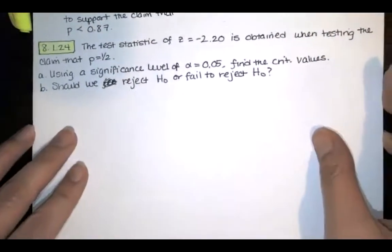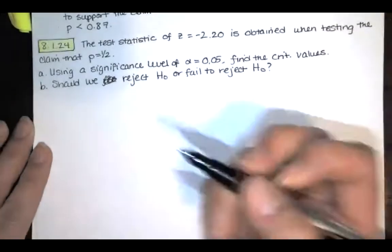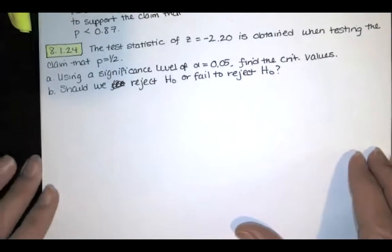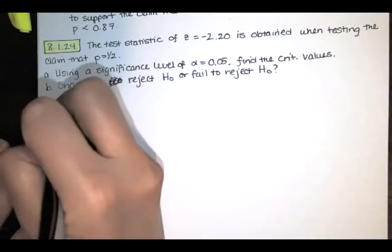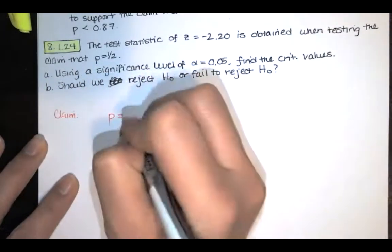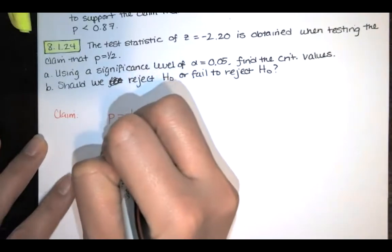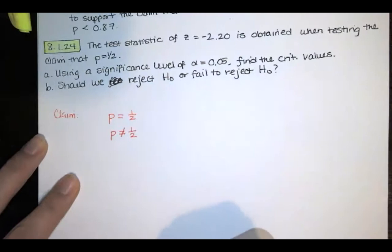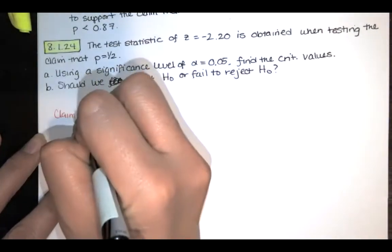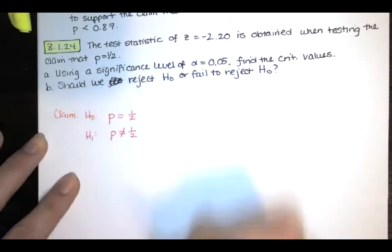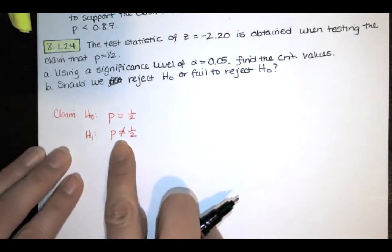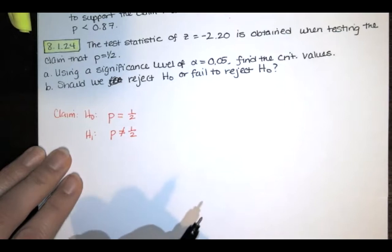This is the question that we're working on right now. So let's always start by stating the claim and the null and alternative hypotheses. Our claim is that the true population proportion is equal to one half. If that's not true, we'd have P is not equal to one half. This statement contains the condition of equality, so that's our null hypothesis. And this is our alternative hypothesis. Because this is a not equal sign in our alternative hypothesis, this is a two-tailed test.